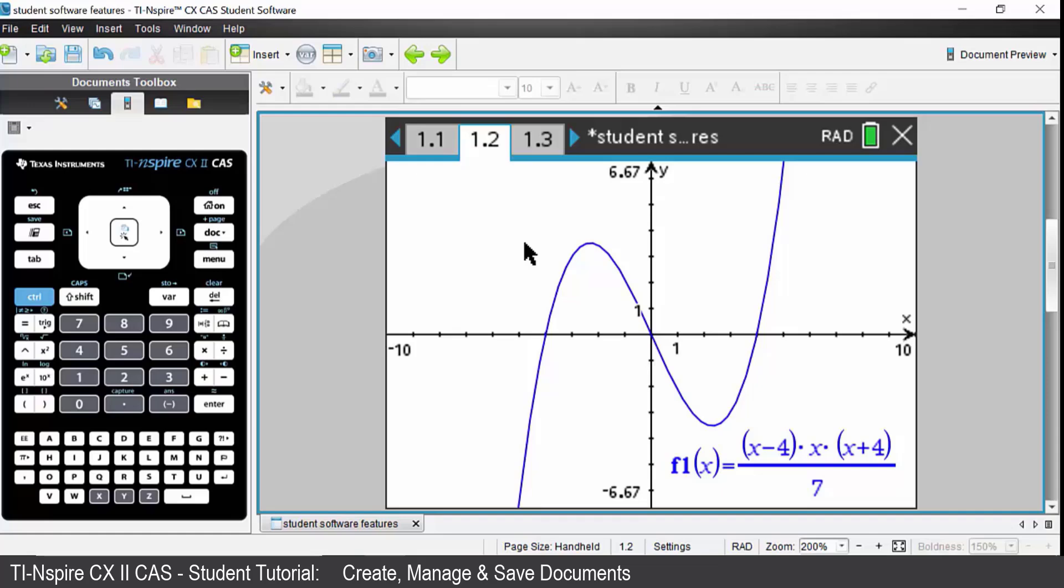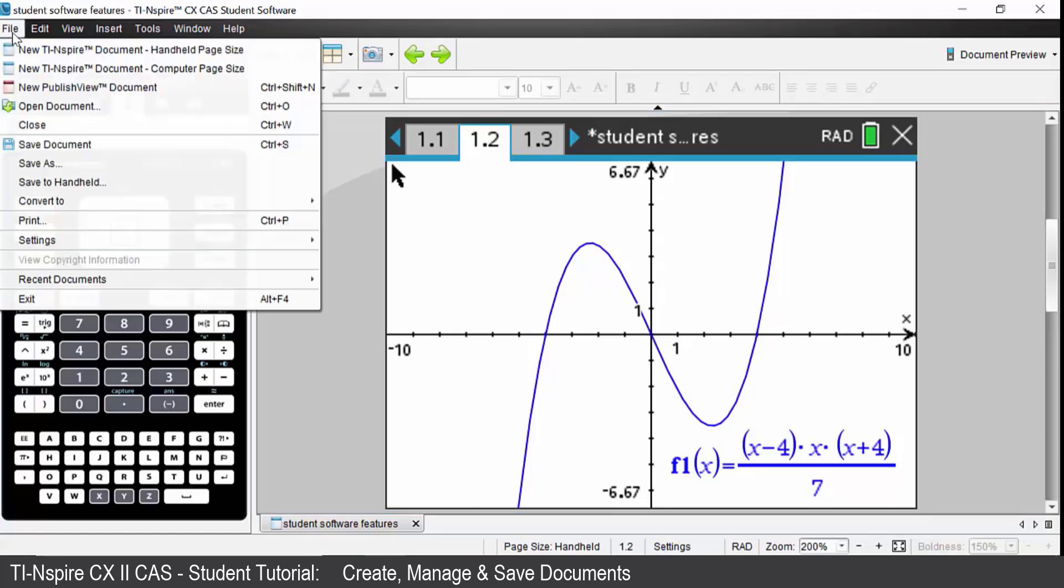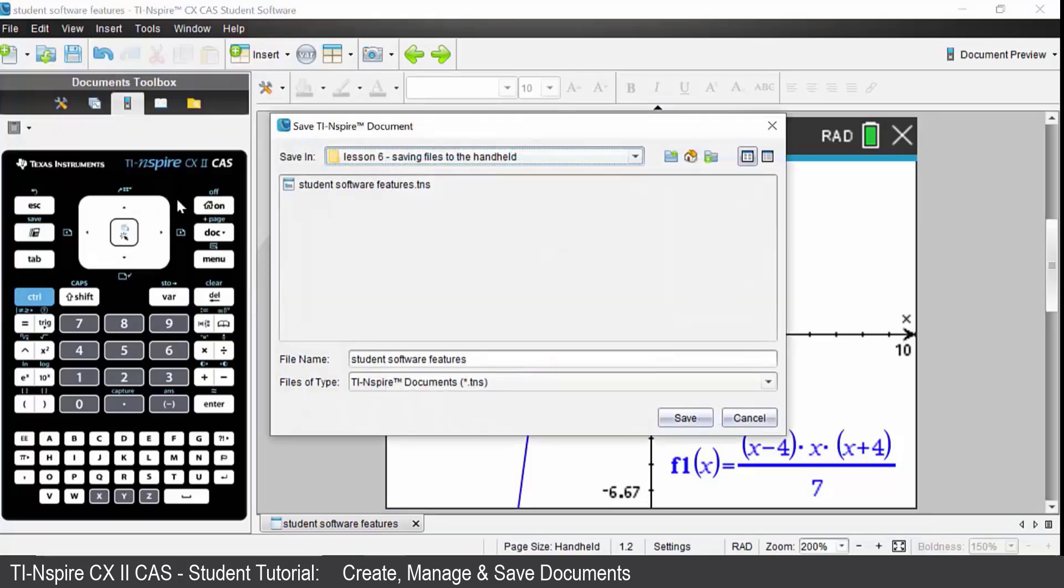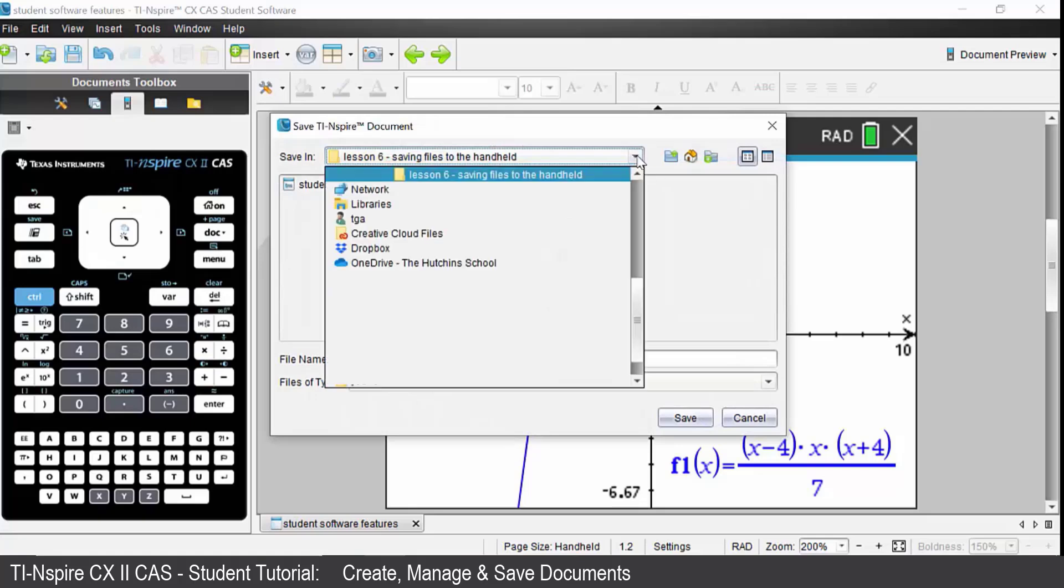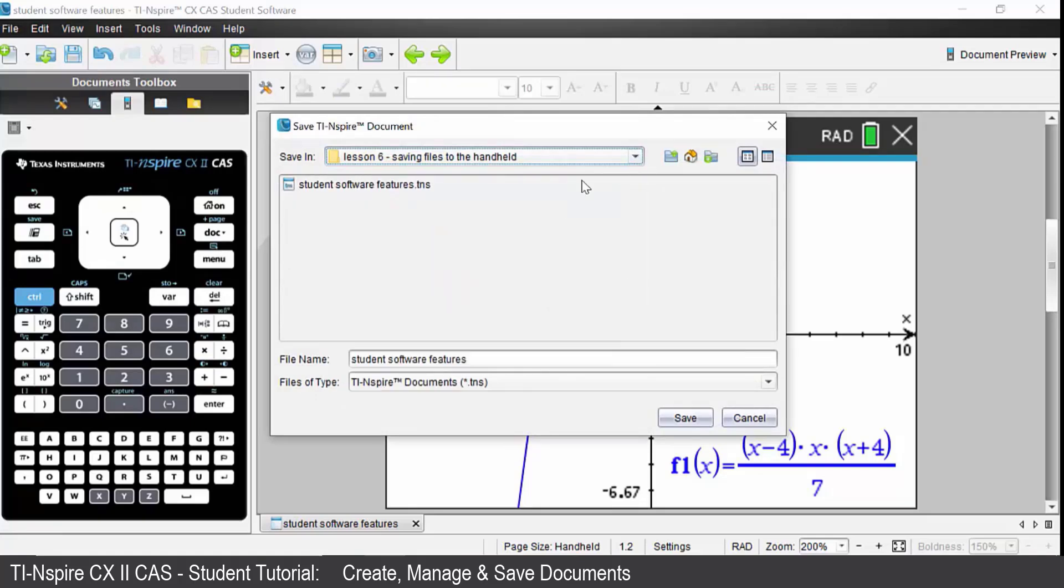You may wish to save this document onto your computer. To do that, come up to the file menu on your computer software, come down to save as, then navigate to the area that you want to save it to. Put in the name of your file. Note that the extension for any of these files is a .tns extension. Press save and that file will be saved to your computer.